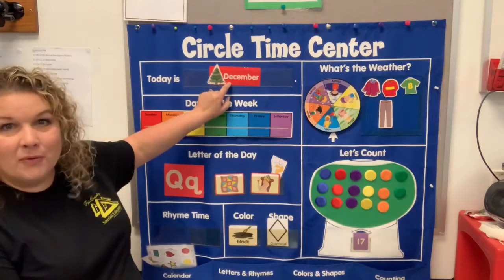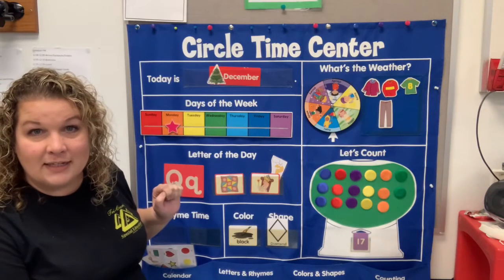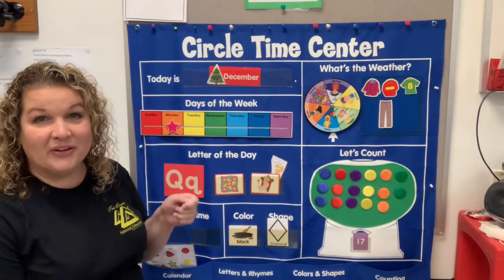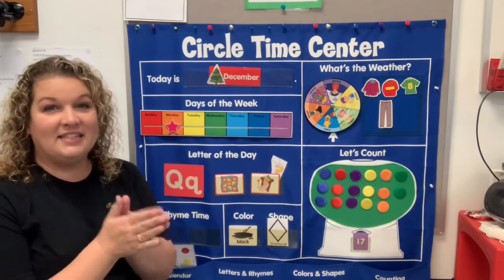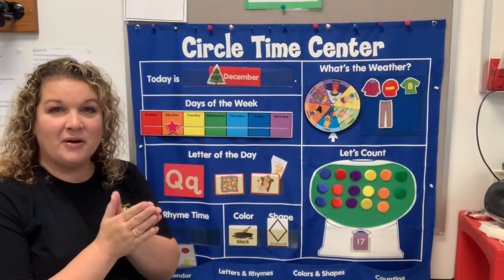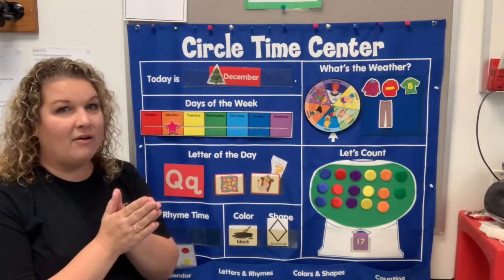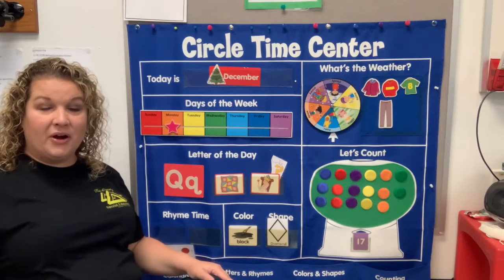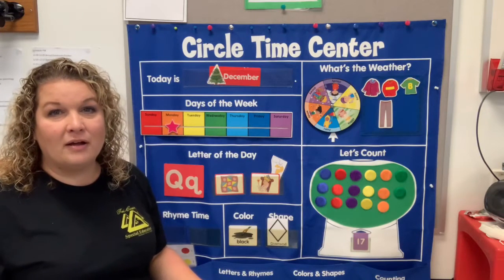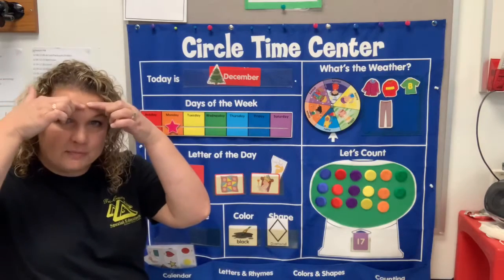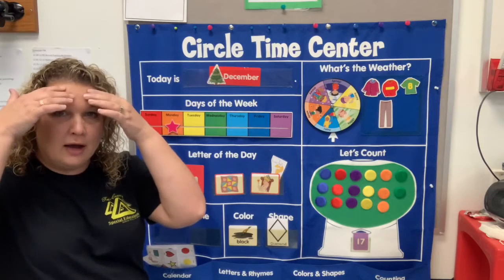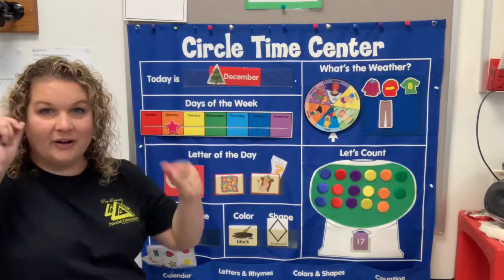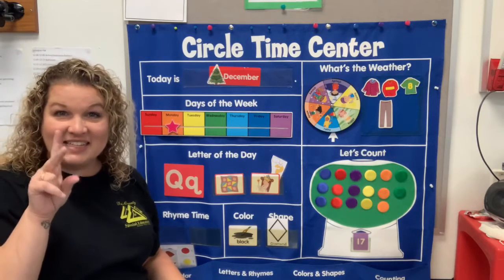Does anybody remember what our month is called that has Christmas in it? December! Let's clap it out — D-C-M-B-R. Now let's tap it out on our knees — D-C-M-B-R. And now let's tap it on our forehead — that's the bony part above our eyes and under our hair. D-C-M-B-R. It has three beats.